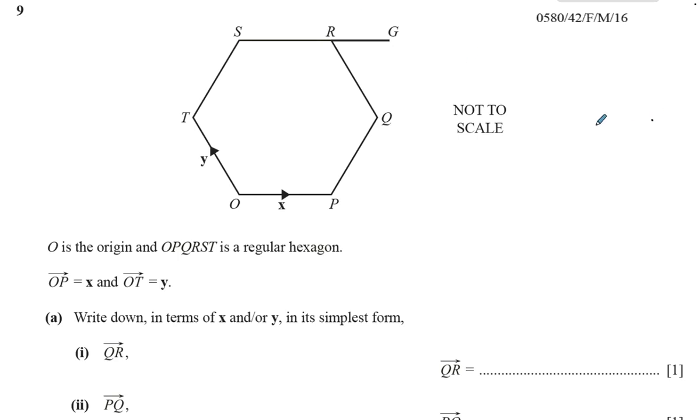We have a regular hexagon. OPQRST is a regular hexagon. A regular hexagon means all the sides are the same length and all the angles are the same size. And they told us that OP is equal to the vector X and OT is equal to the vector Y.